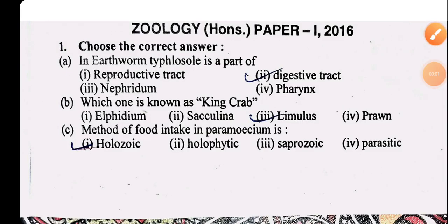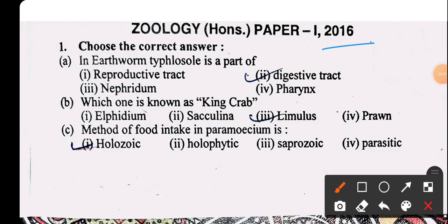This is the previous year question paper for 2016. We have to cover this topic. The first question is a multiple choice question, and the first question is: in earthworm, the typhlosole is the part of the digestive tract — that will be the right answer.